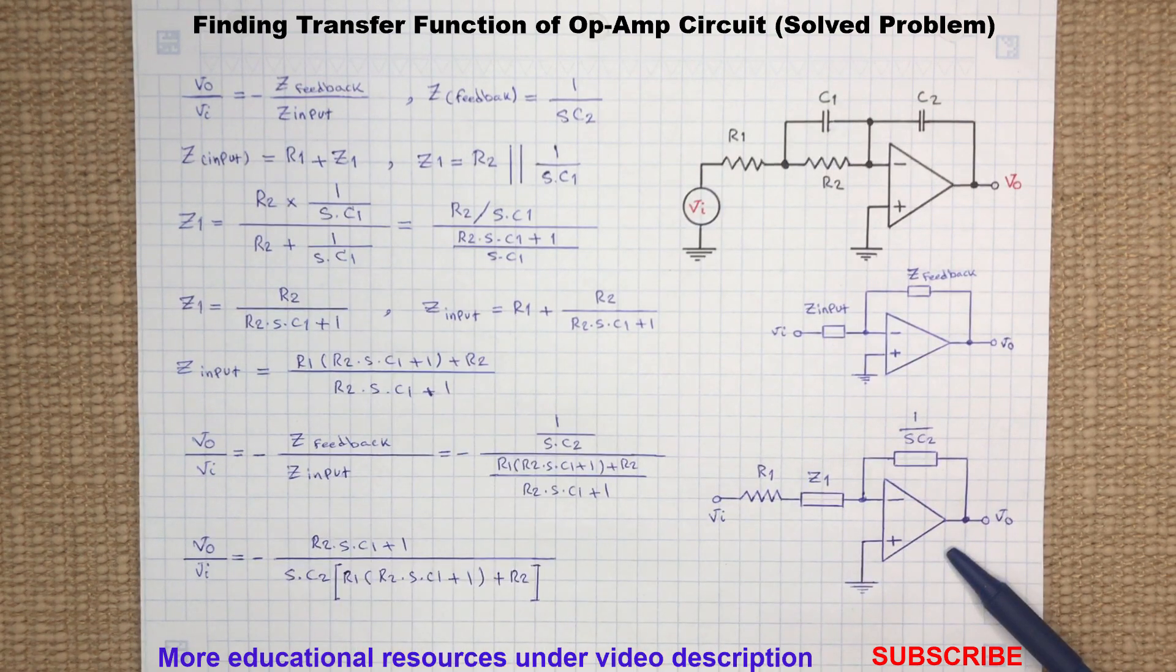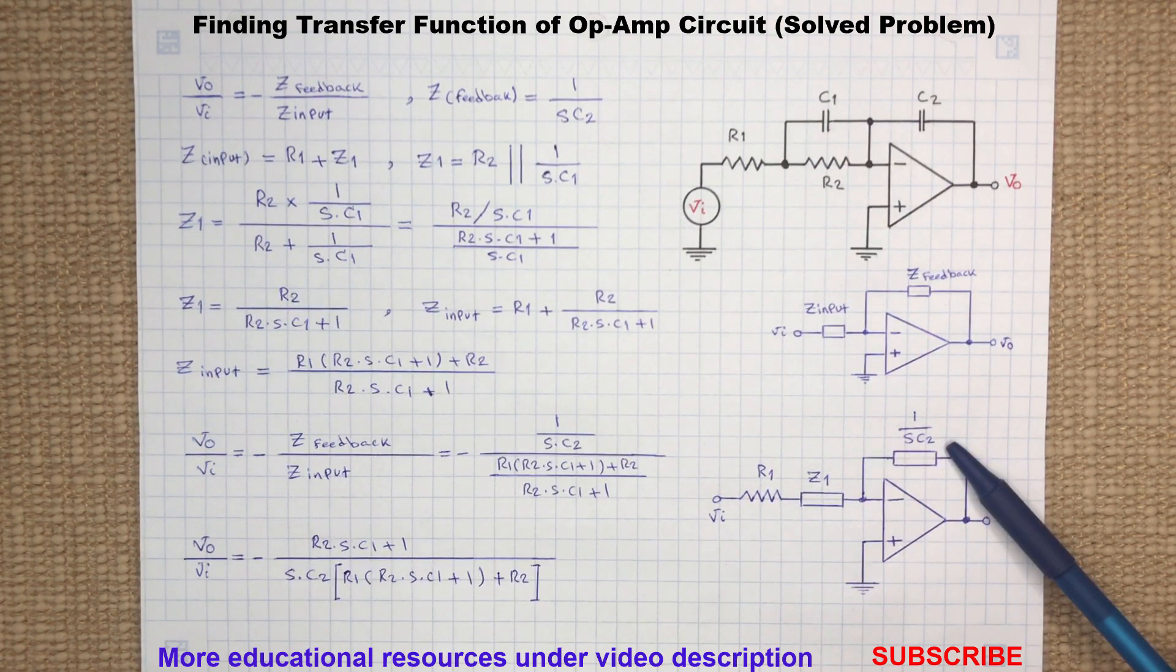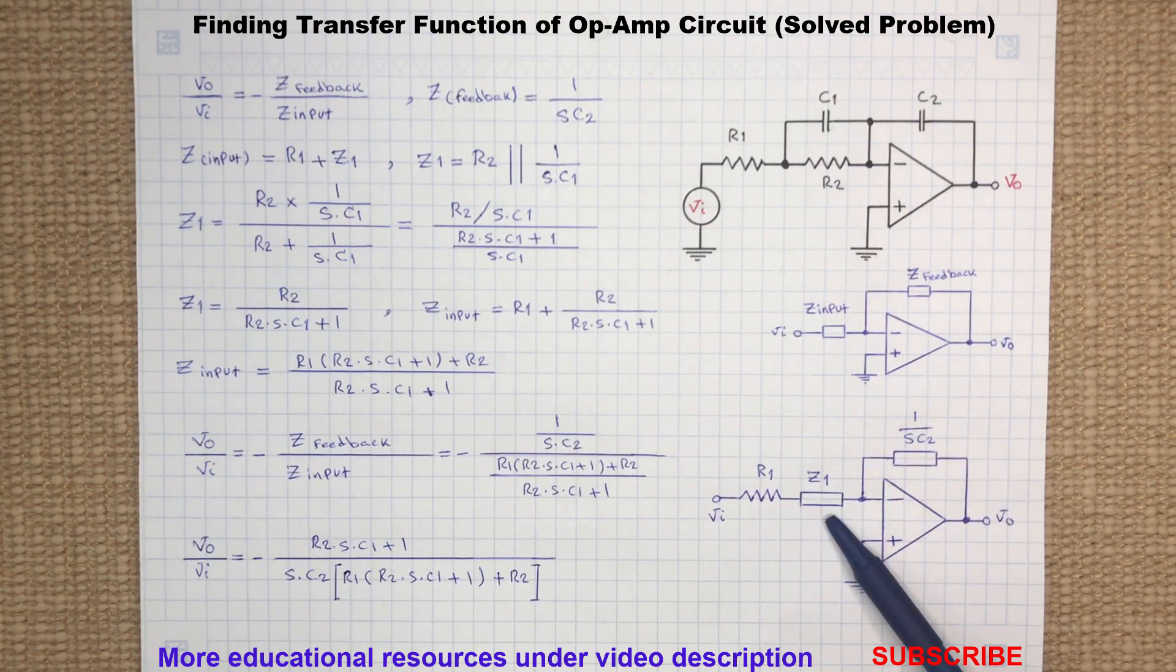This is the simplified version of the above circuit. 1 over S times C2 is the impedance of the capacitor C2 and Z1 represents the equivalent impedance of R2 and C1.